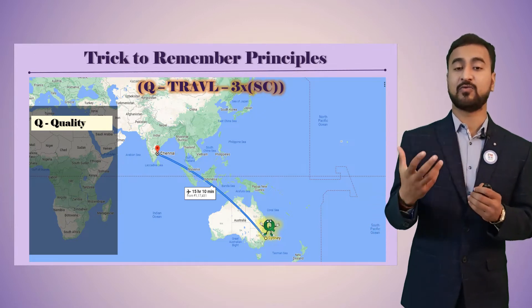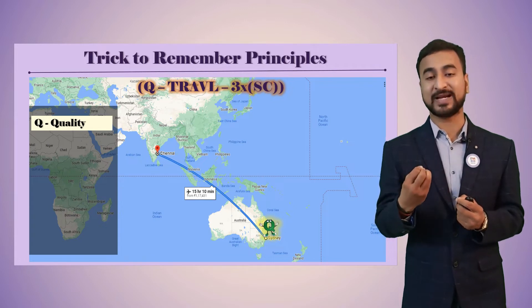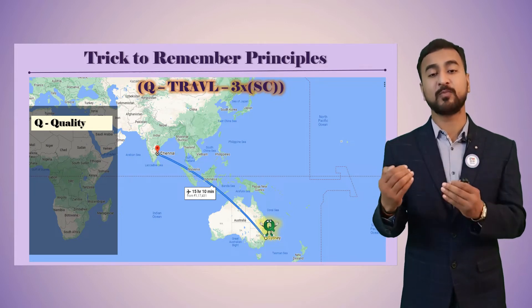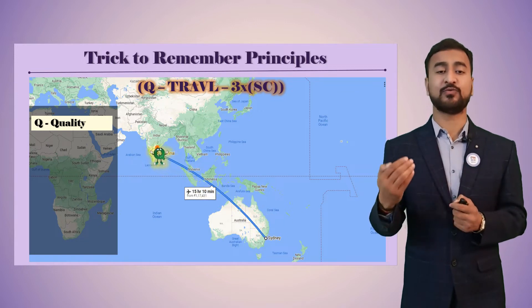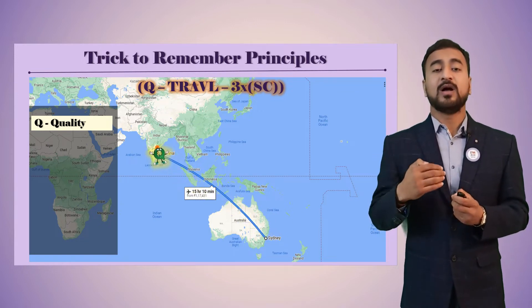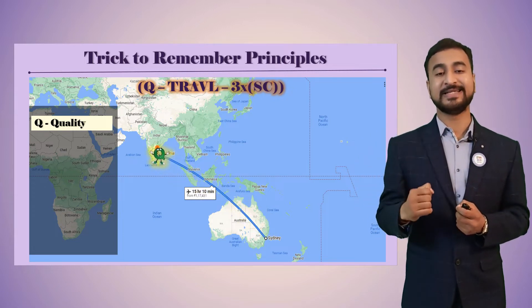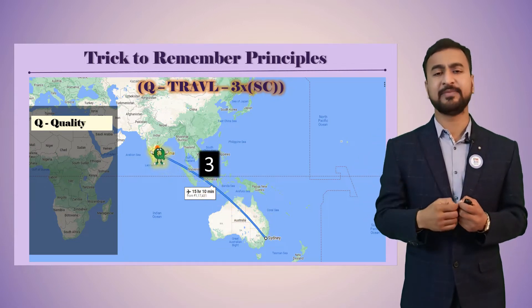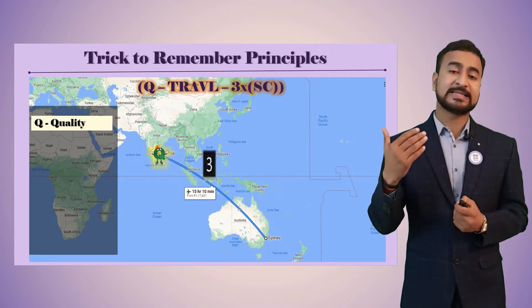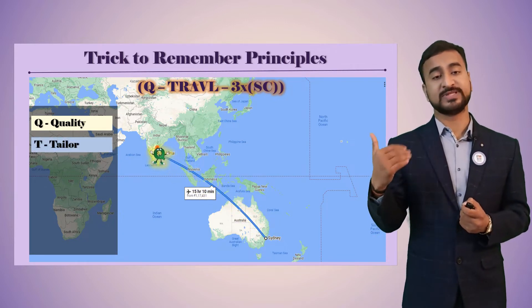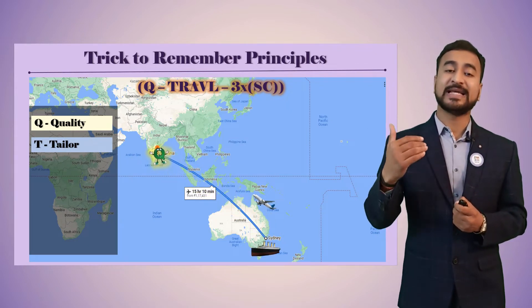Q stands for Quality. Quality is about what is the expectation or requirement — fit for purpose to the customer. Mr. Q wants to travel from Sydney to Chennai to sign an agreement or close a deal. He has to travel three times from Sydney to Chennai — that is how you recall this principle.